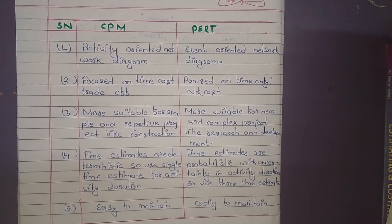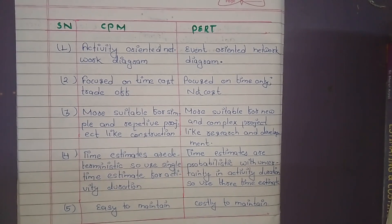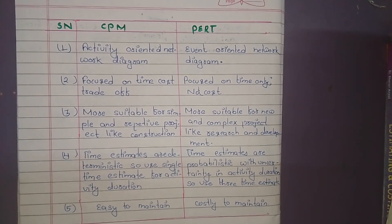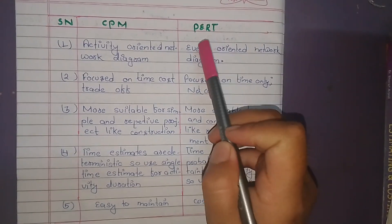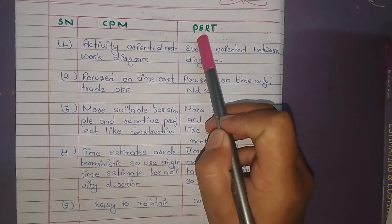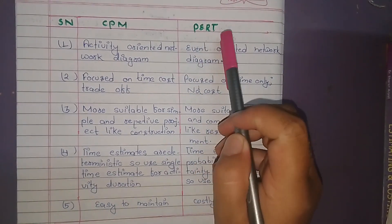This is the difference between CPM and PERT. The full form of CPM is Critical Path Method, whereas PERT is Program Evaluations and Review Technique.